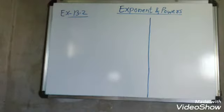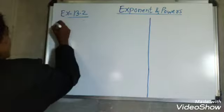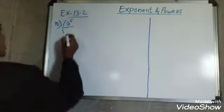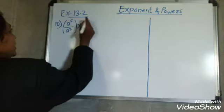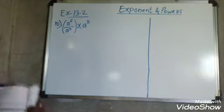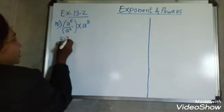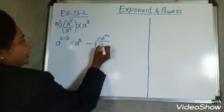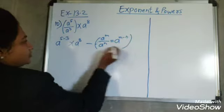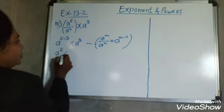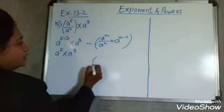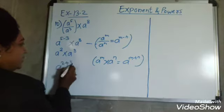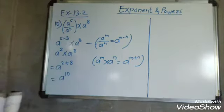Now the 10th example: A raised to 5 upon A raised to 3, into A raised to 8. Using the formula A raised to M upon A raised to N equals A raised to M minus N: A raised to 5 minus 3 gives A raised to 2, into A raised to 8. Then using A raised to M into A raised to N equals A raised to M plus N: A raised to 2 plus 8 equals A raised to 10. Our answer is A raised to 10.